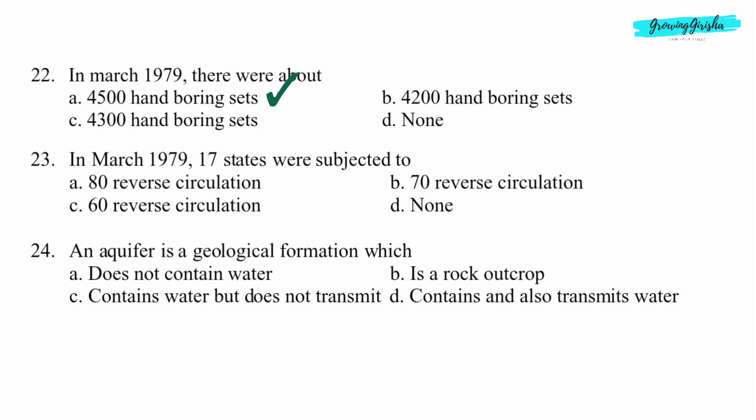Question 23. In March 1979, 17 states were subjected to? Option A: 80 reverse circulation.